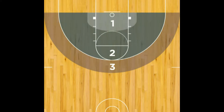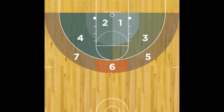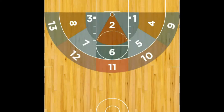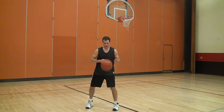For post moves, select spot number one if using the level one shooting chart, or select the spot from where you shoot the ball, not where you execute the move, in shooting charts levels two and three.